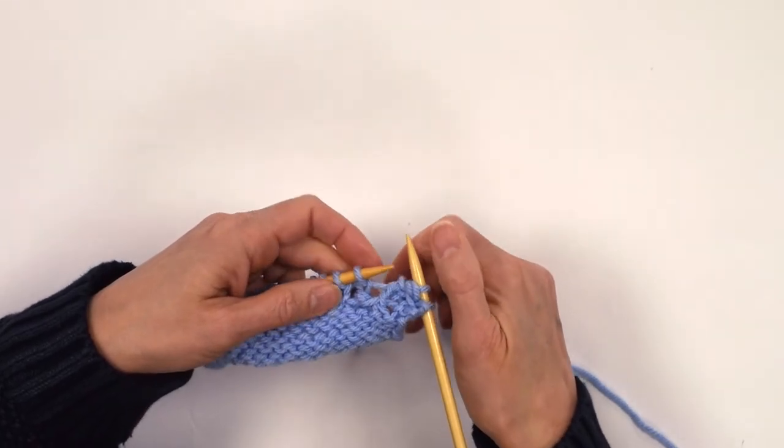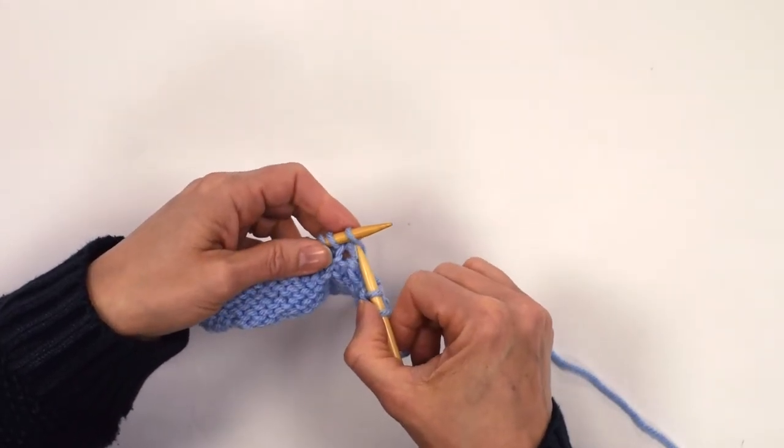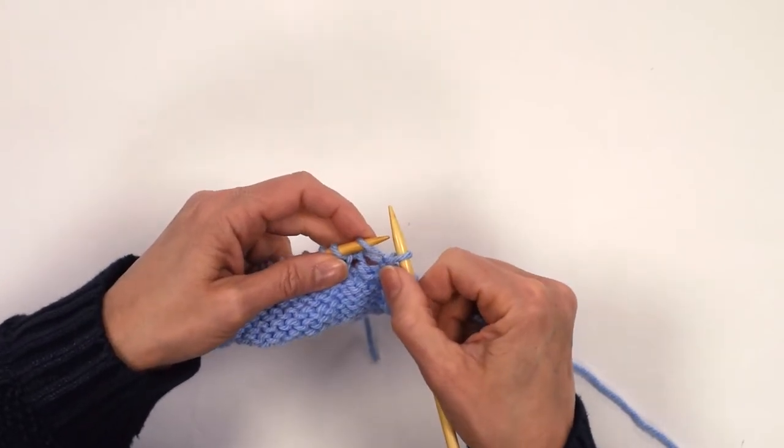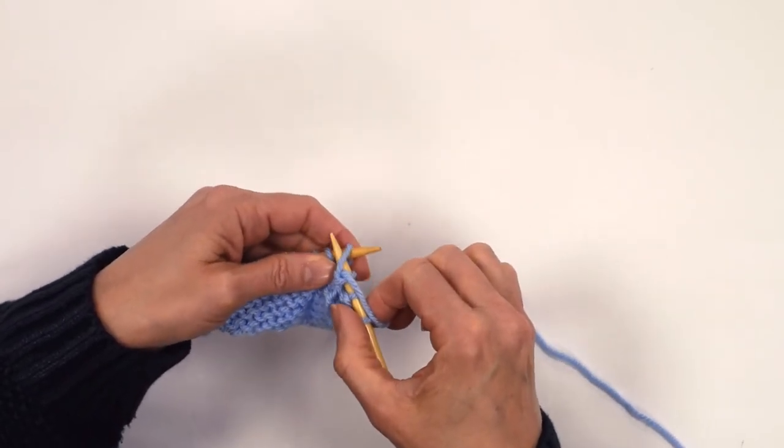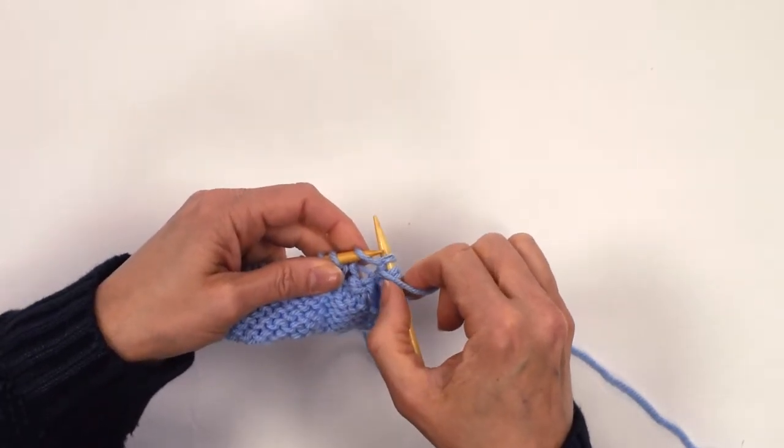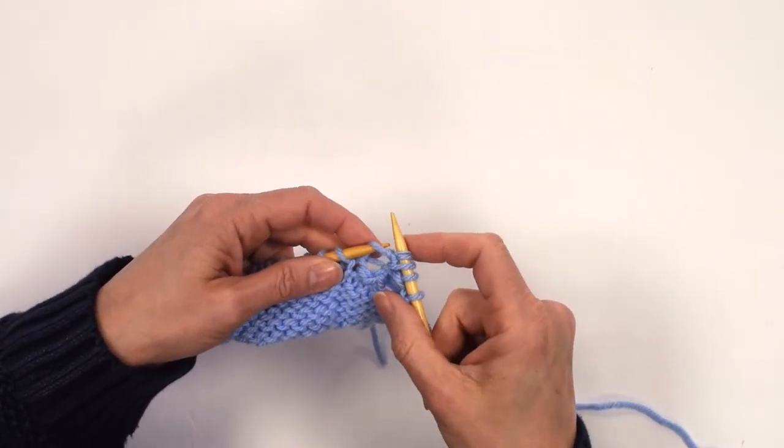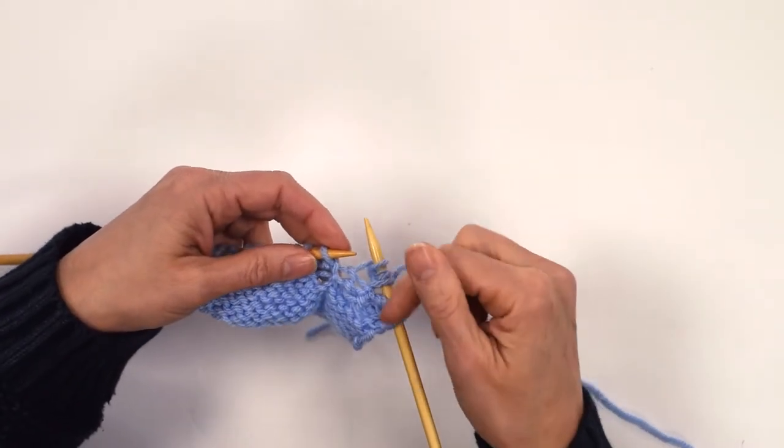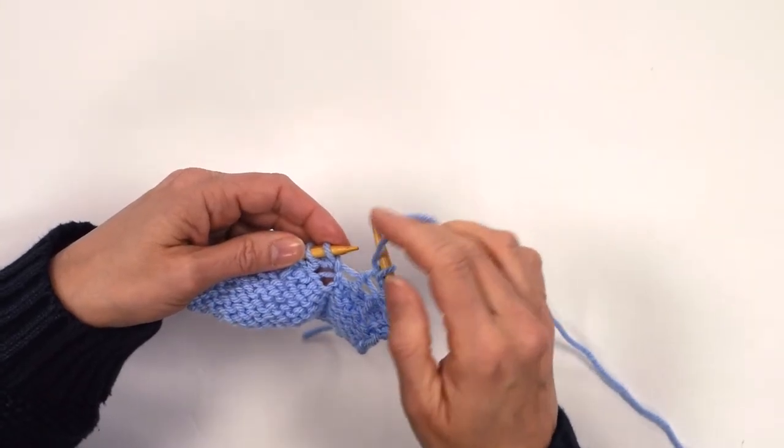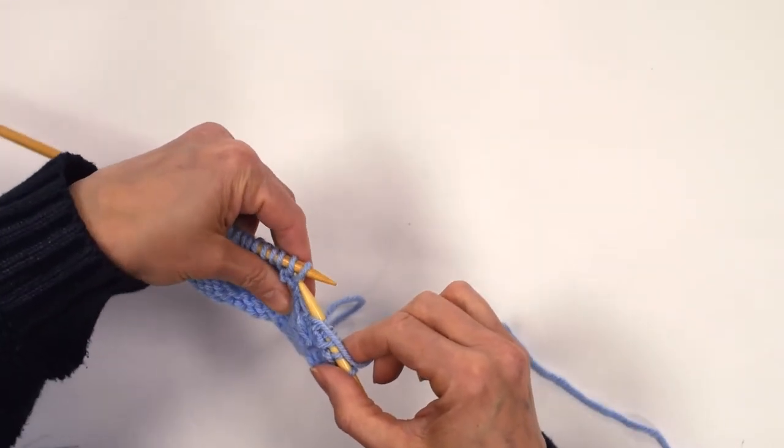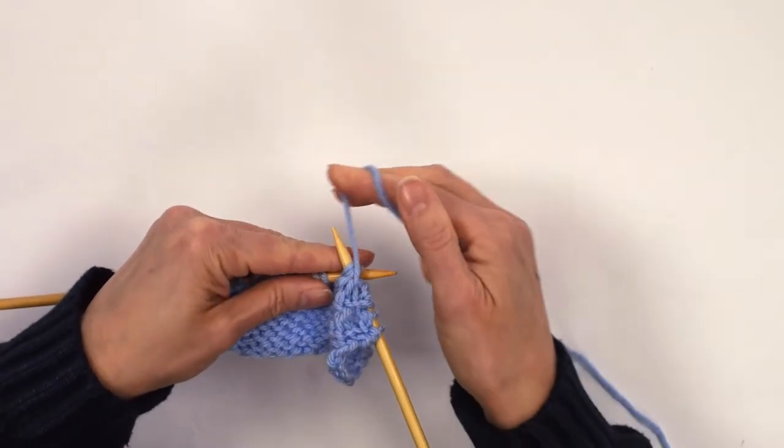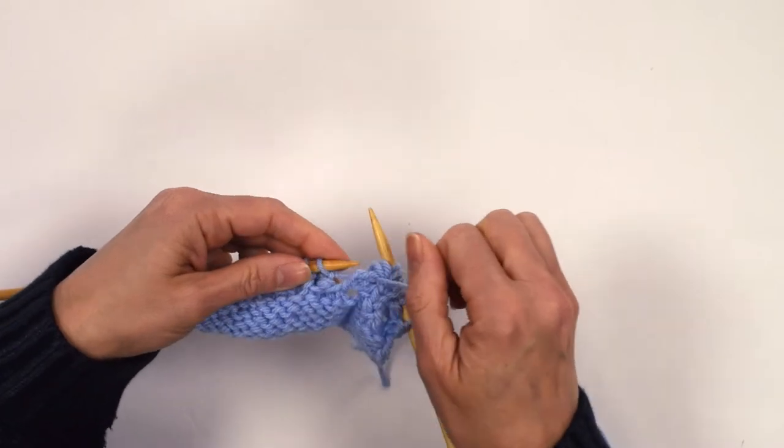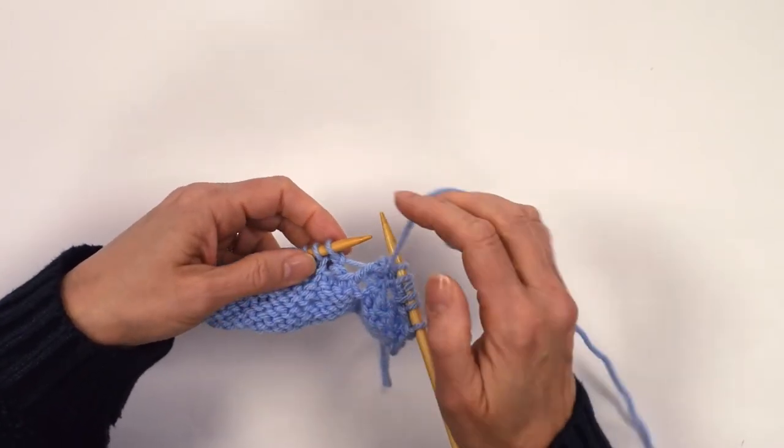Then, take the yarn back between the needles because the individual stitch is going to become three. So we knit into the front, bring the yarn forward, purl into the back, take the yarn back between the needles, knit into the front. So we're doing it in the opposite way to last time. Bring the yarn back to the front again, put all three of those stitches onto your needle, purl three together, and you're back to your individual one again.